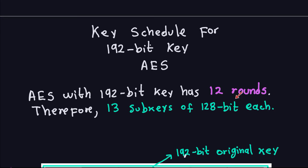Remember that the number of subkeys is always equal to the number of rounds plus one, because the first round of the Advanced Encryption Standard takes two subkeys. So in this case, because I have 12 rounds, I will need 13 subkeys, and each one of them will be 128-bit. It doesn't matter how long your key is — your subkeys will all have 128-bits each. So we need to produce 13 subkeys of 128-bits each.